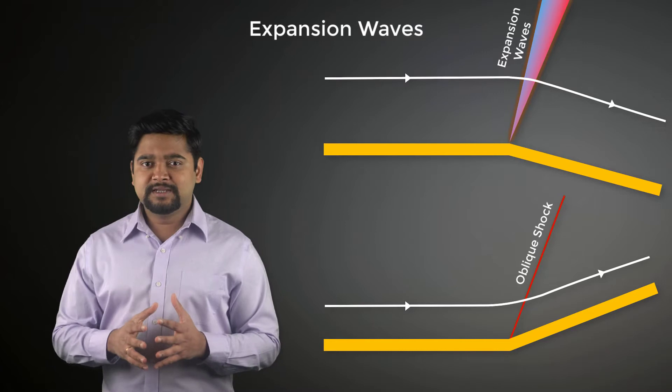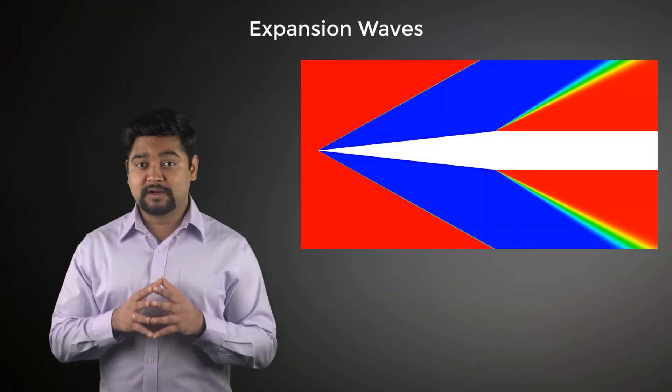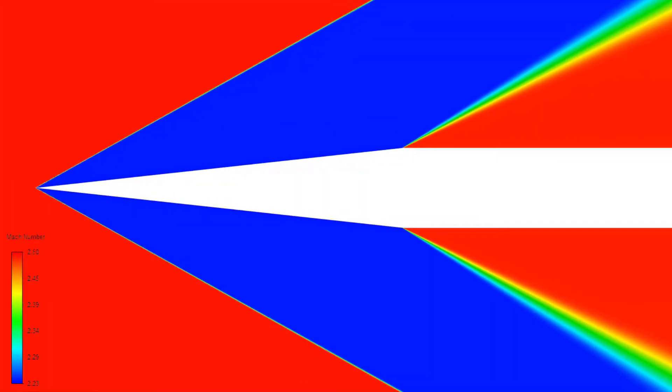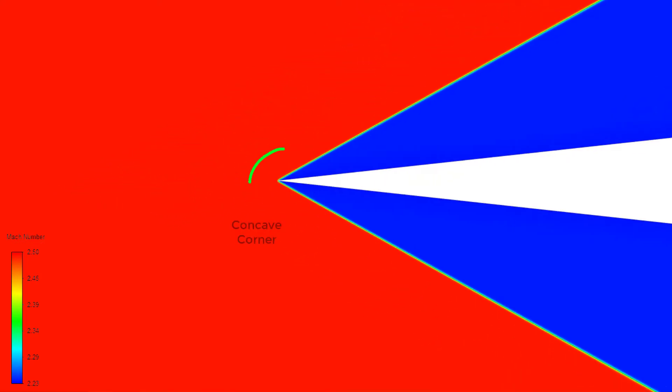As can be seen in this Mach number contour plot, when a Mach 2.5 flow encounters this cone, the leading edge essentially acts as a concave corner. We can see that this encounter results in the formation of an oblique shock. Across the shock, the Mach number decreases. That is, the flow decelerates and the static flow properties increase.